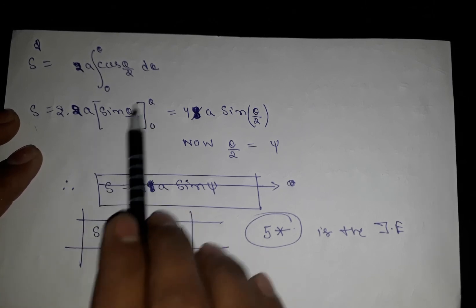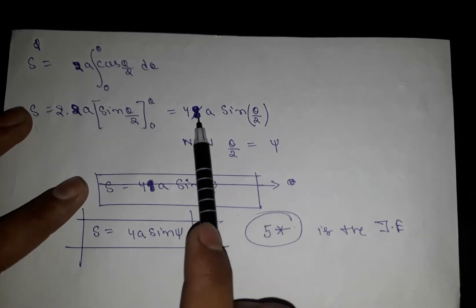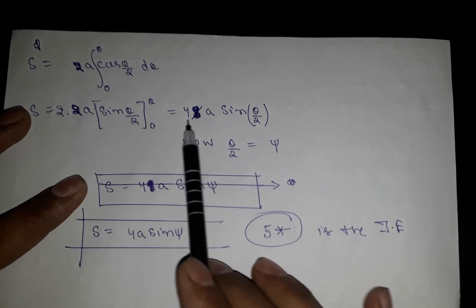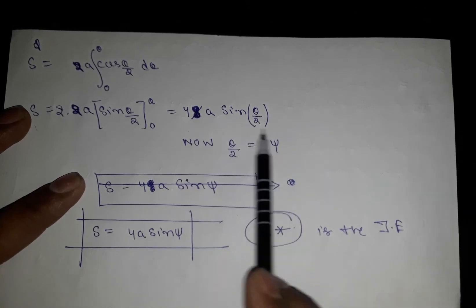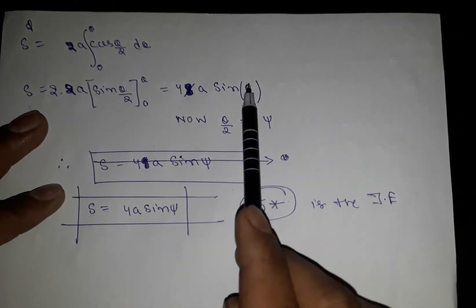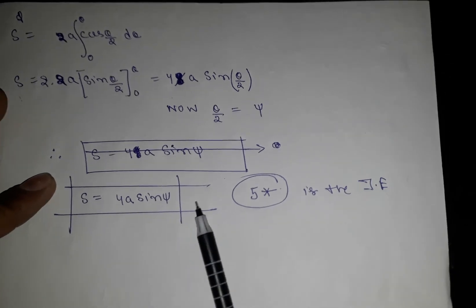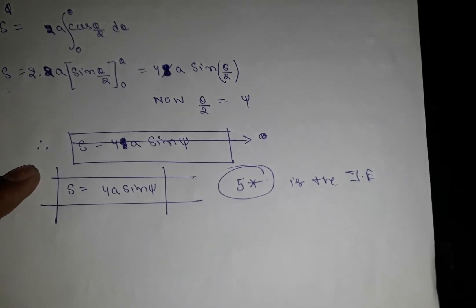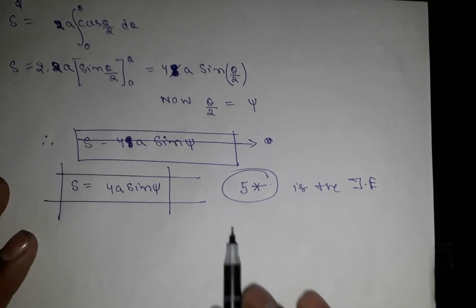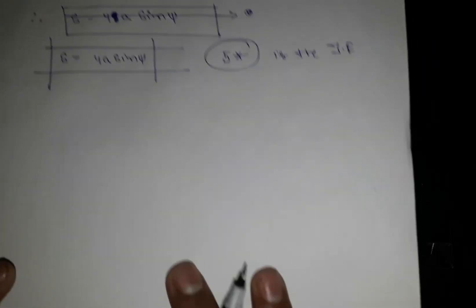We get ds/dθ = 4a sin(θ/2). Since ψ = θ/2, we substitute to get s = 4a sinψ. This is our intrinsic equation. So the intrinsic equation is s = 4a sinψ, which is a very important result.